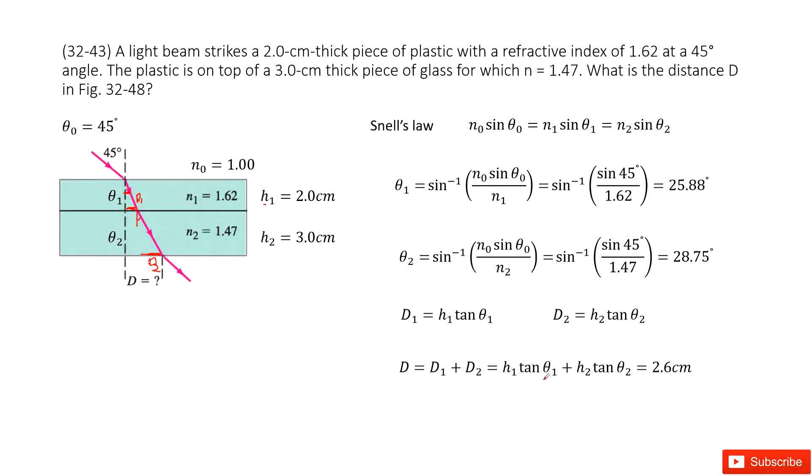Now question looks like we need to find theta 1 and theta 2. So how to find theta 1 and theta 2? Look at Snell's law. Snell tells us the incident wave n0 sine theta naught equals n1 sine theta 1 equals n2 sine theta 2.